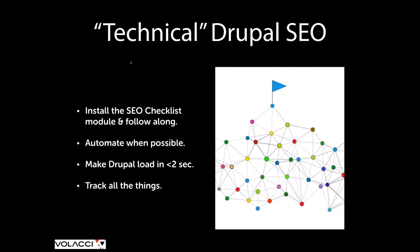Technical SEO — I'm going to boil it down to a handful of things. First, you're going to install the SEO Checklist module and follow along through it. We maintain that module; when new modules or recommendations come out, we add them. We released the Drupal 8 version today, so you can download it from Drupal.org. Second, automate when possible by using tokens. If you're creating a site for a company with multiple locations, create nodes with the location names so you can leverage those in tokens for the page title, H1, and meta tags — it automates a lot of the process and saves time and money.